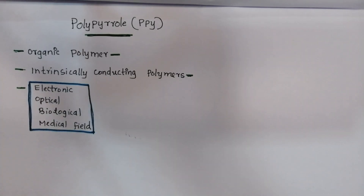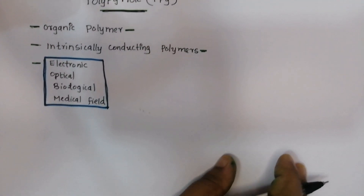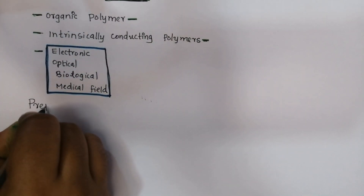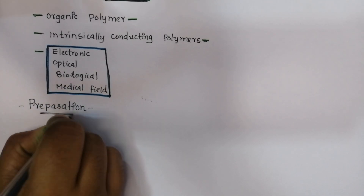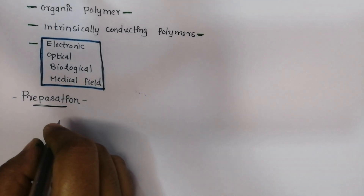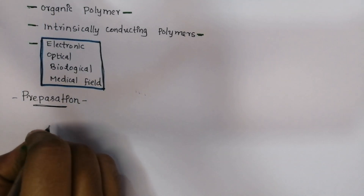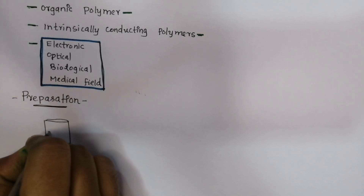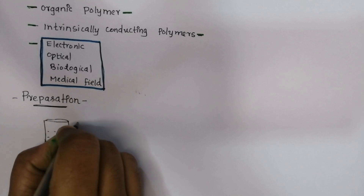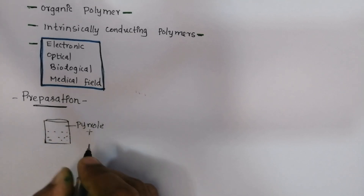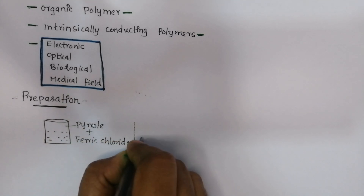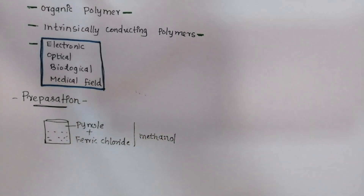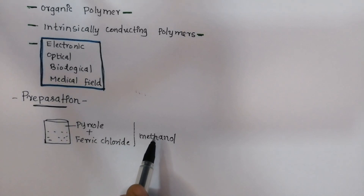Let's look at the preparation — it is simple. Three things are preparation, property, and application. For preparation, we use oxidative polymerization of pyrrole. We use ferric chloride (FeCl₃) and methanol. So the first method is oxidative polymerization of pyrrole using ferric chloride in methanol.